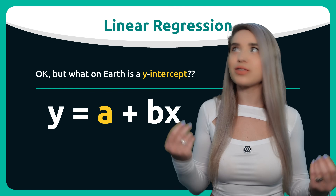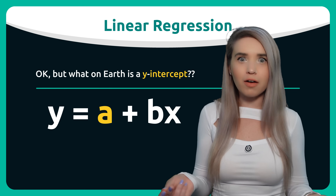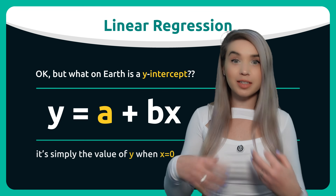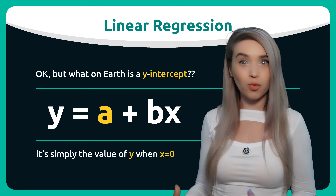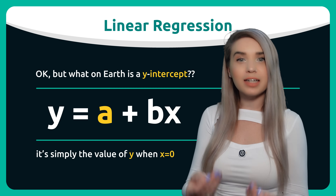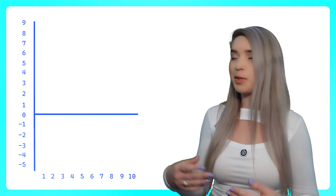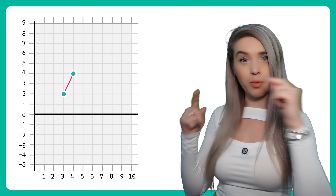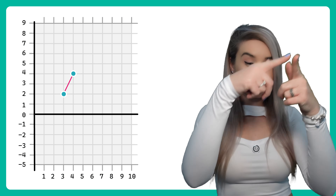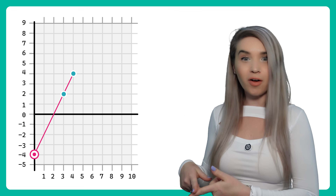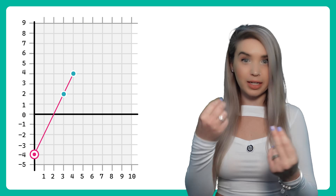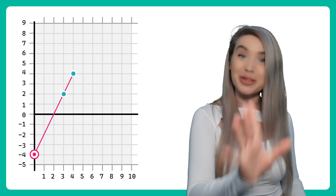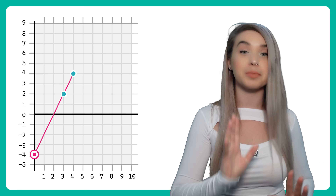Okay, but what on earth is a y-intercept? Well, it is simply the value of y when x equals zero. So if we draw an imaginary line from one point to the other and continue it all the way until we hit the y-axis, that's exactly where the y-intercept lives.